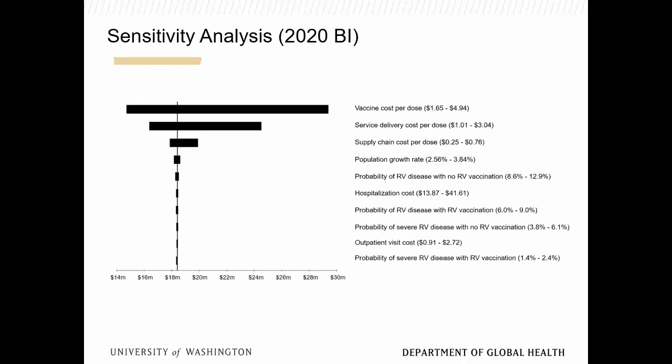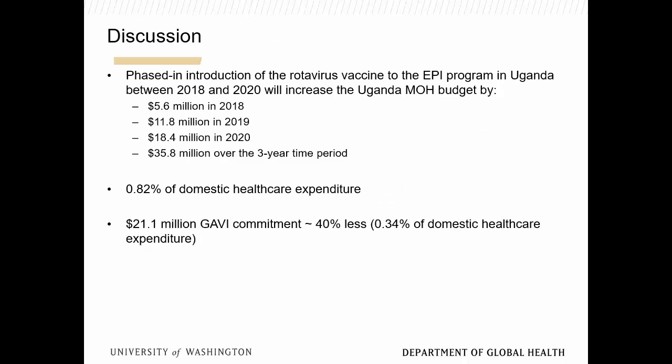BIAs usually do deterministic one-way sensitivity analysis, and the main driver here was vaccine price. The phased introduction of the vaccine in Uganda would cost just $5 million in 2018, rising to $11 million in 2019 and $18 million in 2020, driven by those increases in coverage — representing just under 1% of domestic Ministry of Health expenditure.